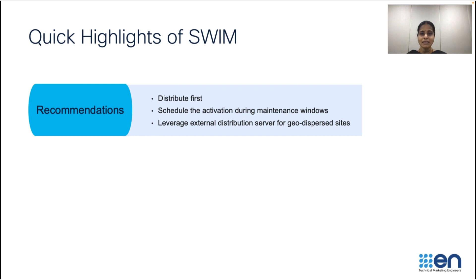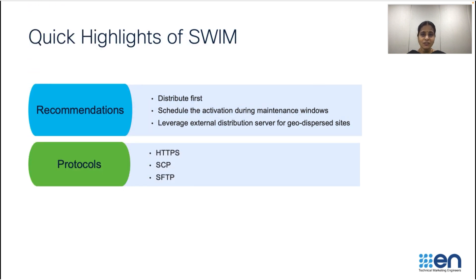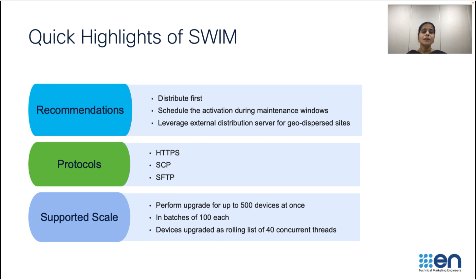Having learned about how DNA Center helps with software image upgrade, here are some key points to remember. Always distribute your software images first, well ahead of the activation window. For large geo-dispersed enterprise networks, leverage the remote distribution server support from Cisco DNA Center. While DNA Center supports multiple protocols for image distribution and activation, HTTPS is the preferred and default choice, followed by SCP and SFTP. When upgrading a large number of devices, perform upgrades for up to 500 devices at once — DNA Center upgrades them in a rolling batch of 40 devices in parallel.